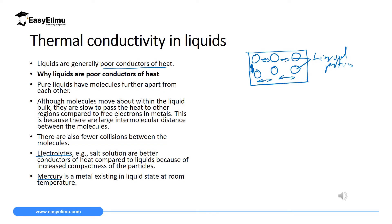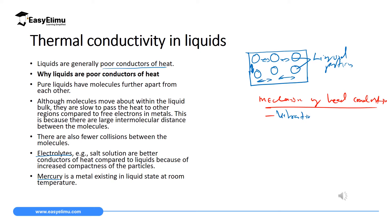When we were discussing mechanisms of heat conduction, we said it can only take place in two ways: either vibration of atoms, or movement of free electrons. Now, in liquids, particles do not vibrate because they move — they undergo Brownian motion. So we will not have vibration of atoms in liquids. And electrons are very few in liquids or in the atoms of liquids.